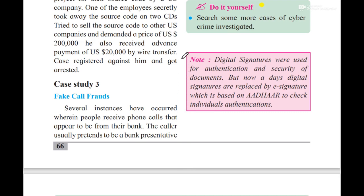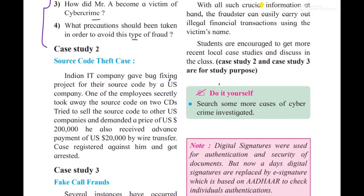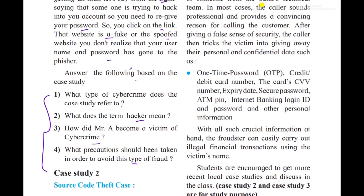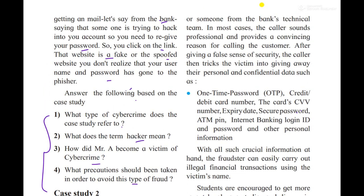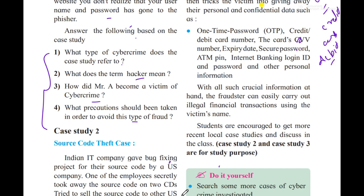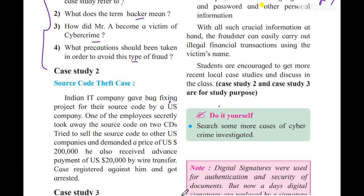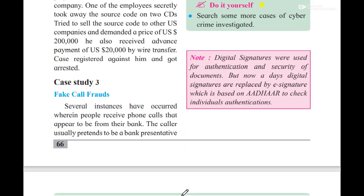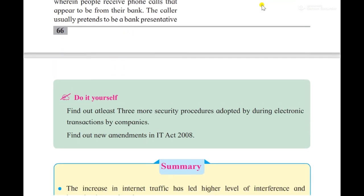Case Study 3 — Fake Call Frauds: Calls come asking your date of birth, name, ATM PIN, or OTP. One-time passwords, credit card numbers, and debit card numbers are requested. These fraudsters create a false sense of security, call customers, and carry out illegal financial activities. This leads to data loss — your data goes to them. Fake call frauds are very common.